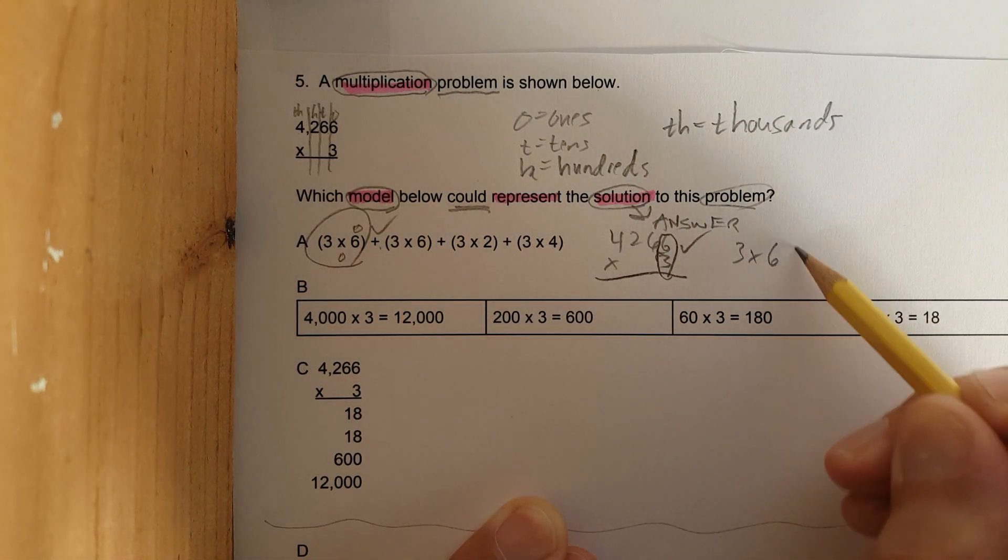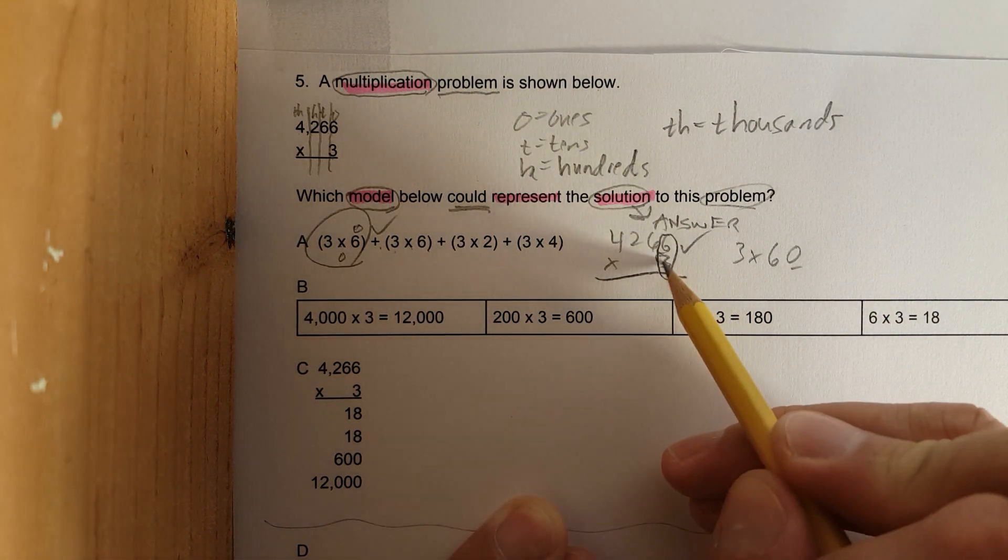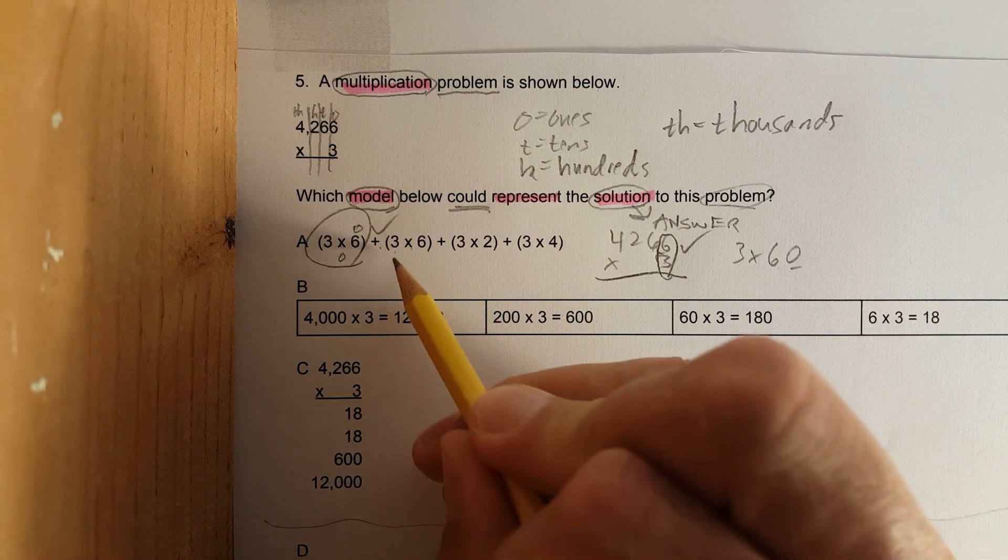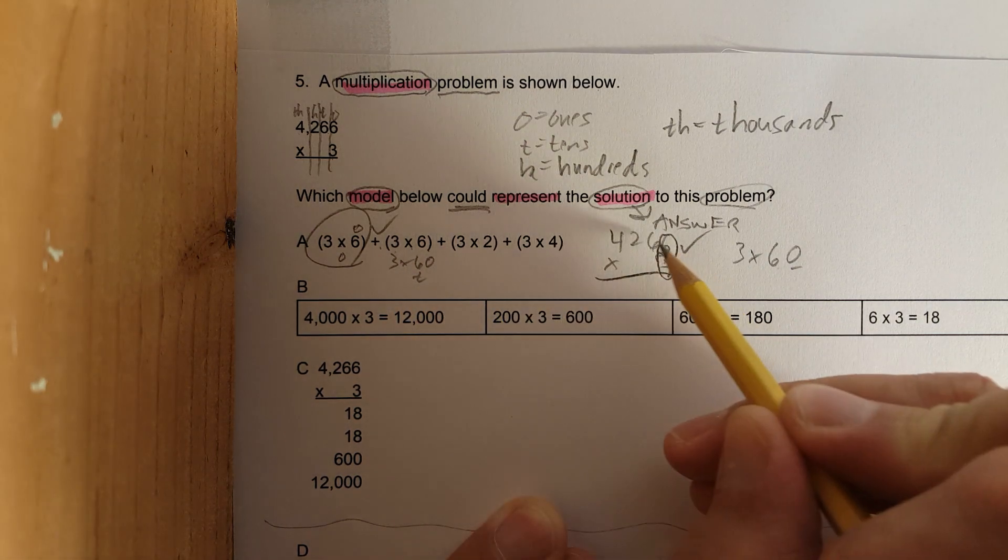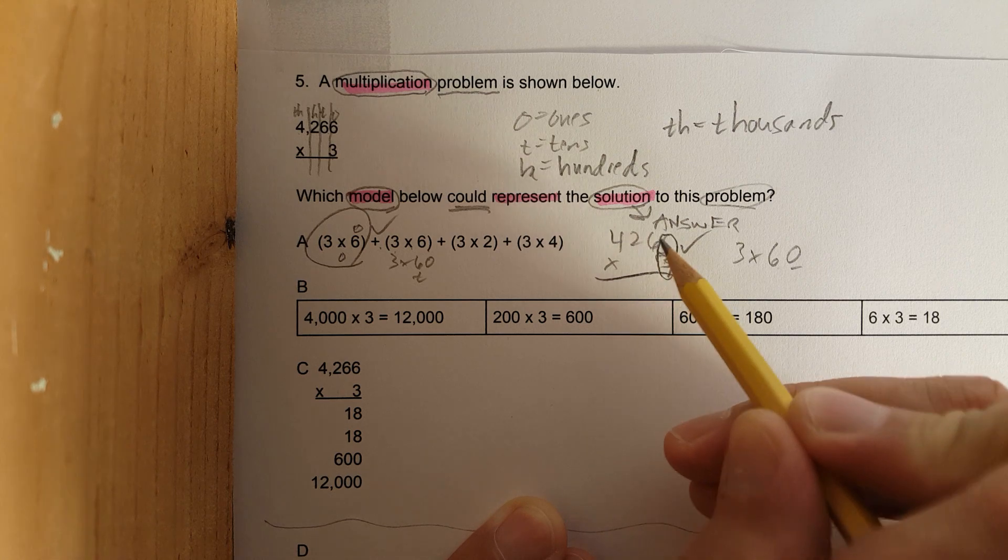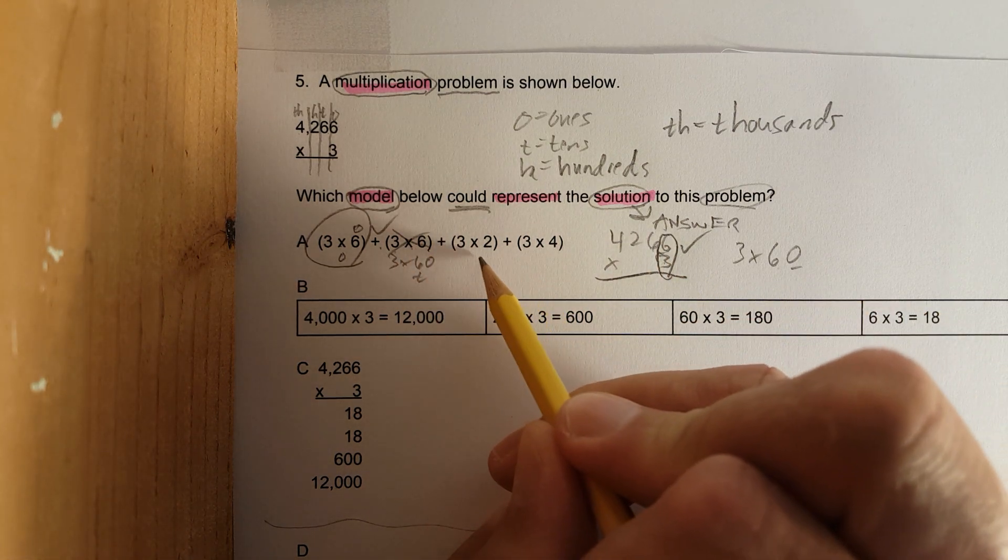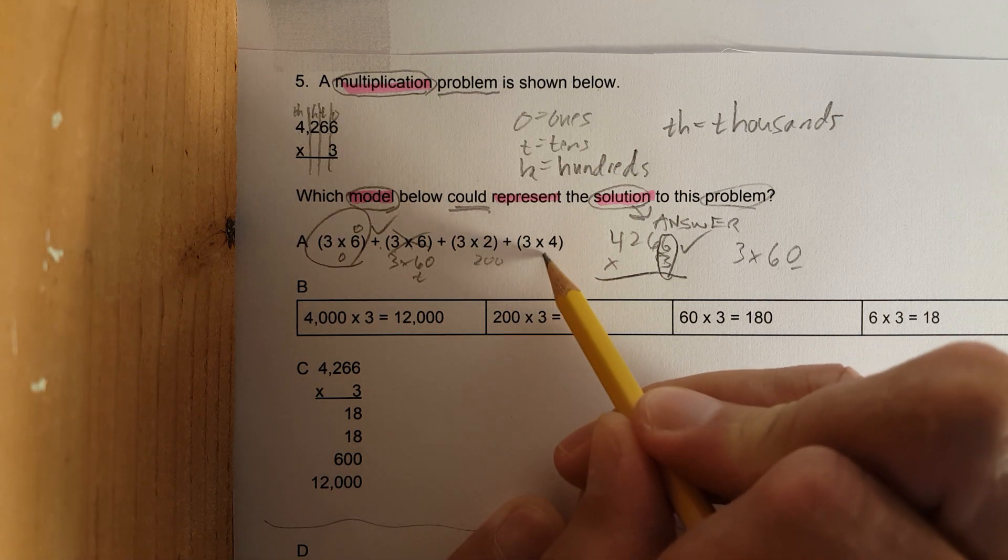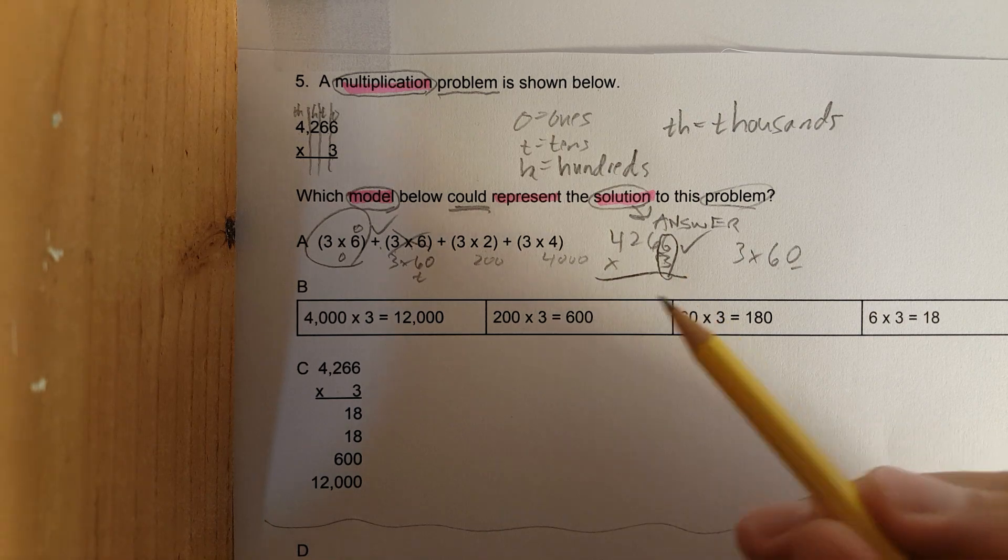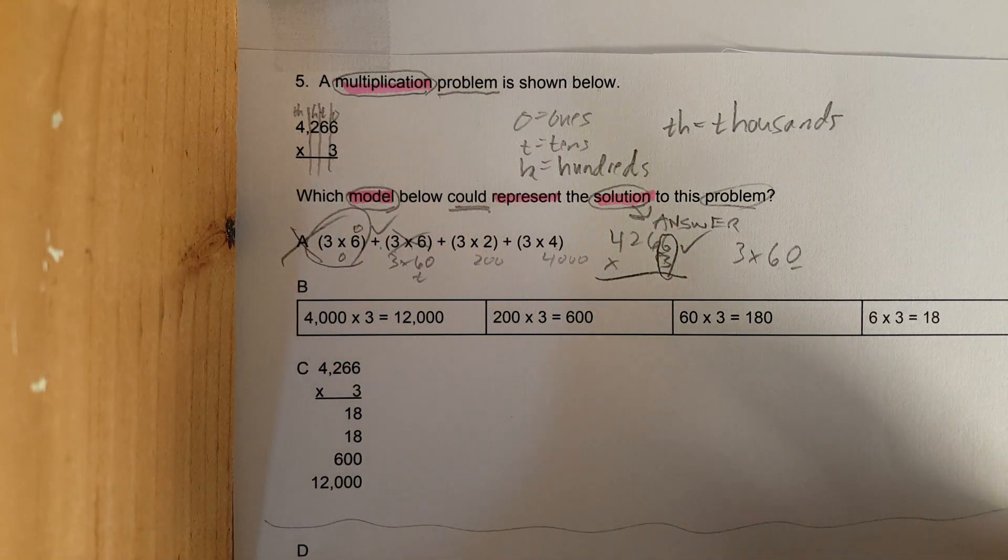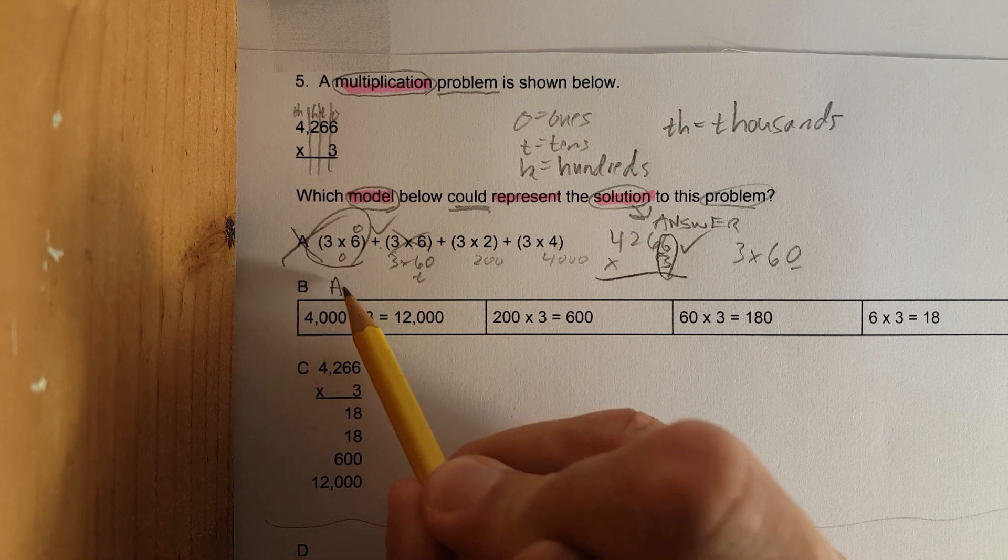Three times sixty. Three times six? Wait, this is three times sixty, this should be three times sixty. We are in the tens place now - ones, tens. This is not correct, therefore this is not correct, and this one's not correct. They forgot all the zeros. So A is not correct. Next one, B - we have area model.